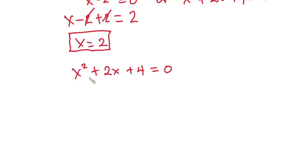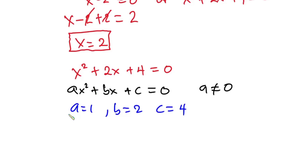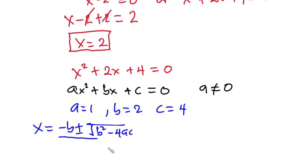Here we have x squared plus 2x plus 4 equal to 0. As you can see, this is a quadratic equation. We compare it to the general quadratic equation ax squared plus bx plus c equals 0, where a is never equal to 0. By comparing coefficients, we get a equals 1, b equals 2, and c equals 4. Now let's plug these into the quadratic formula: x equals negative b plus or minus the square root of b squared minus 4ac, all over 2a.